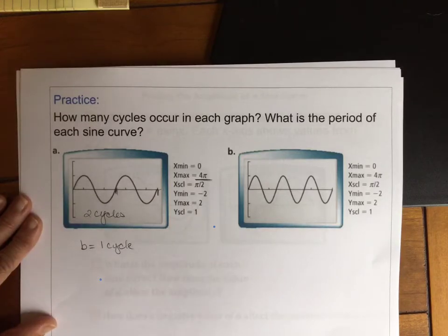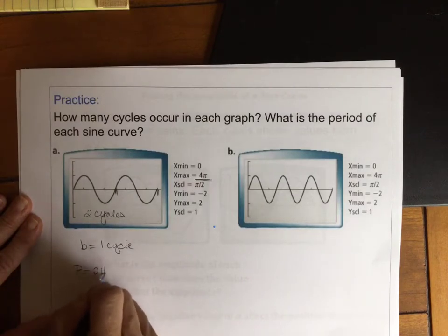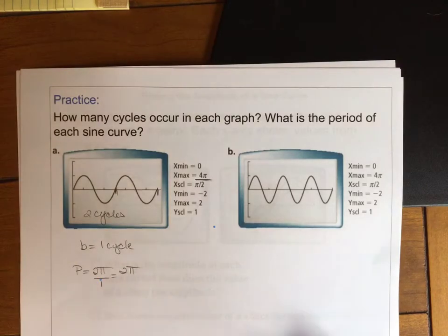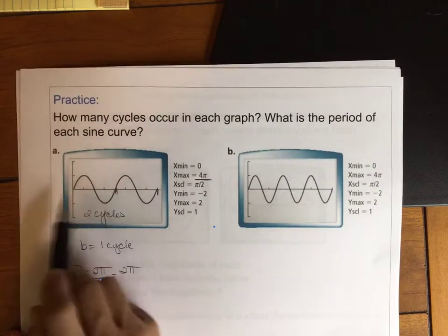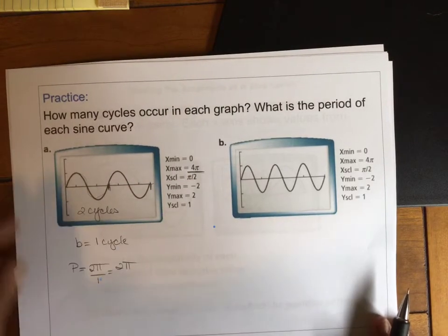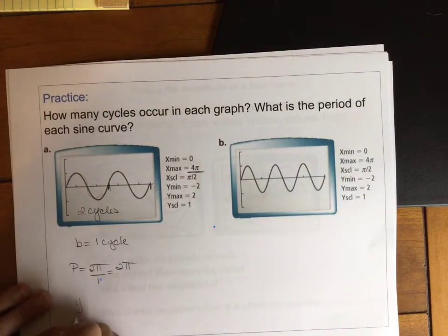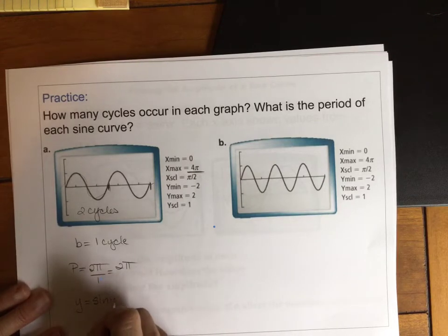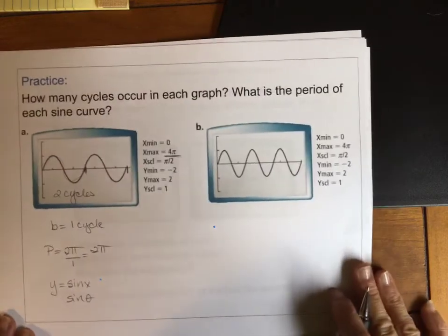And that allows us to figure out what the period of the sine curve is. So P equals 2π over B. So my period is just 2π. And I can make sense of that because the definition of period is the time it takes to complete one cycle. And I have one cycle in 2π. Notice my amplitude is 1 on this as well. So if I wanted to write an equation, this one would just be sine of x or you could write sine of theta as well.